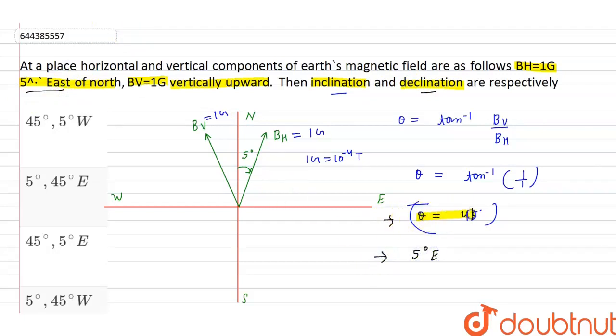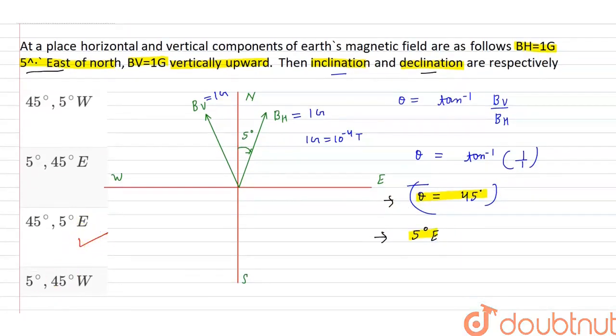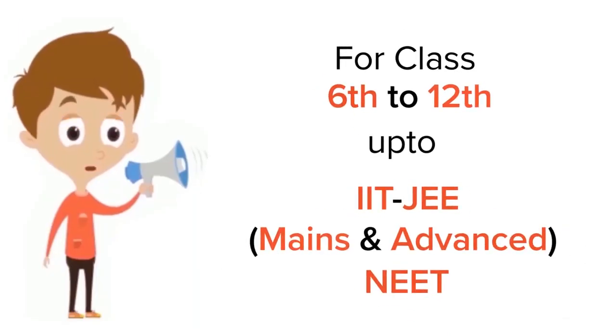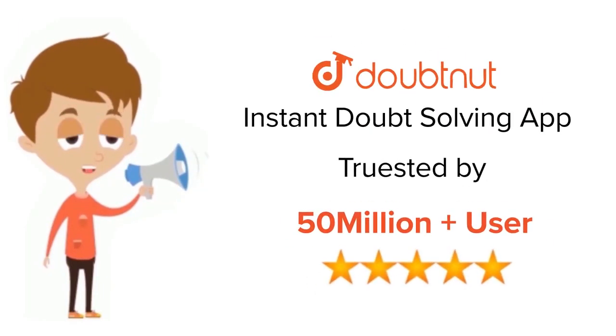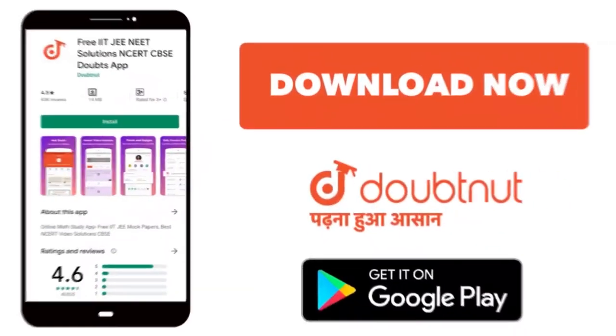These are the answers, inclination and declination, and the correct option is option C. For Class 6 to 12, IIT-JEE and NEET level, trusted by more than 5 crore students. Download DoubtNet app today.